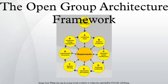TOGAF is based on four interrelated areas of specialization called architecture domains. Business architecture defines the business strategy, governance, organization, and key business processes of the organization. Applications architecture provides a blueprint for the individual application systems to be deployed, the interactions between the application systems, and their relationships to the core business processes of the organization, with frameworks for services to be exposed as business functions for integration.